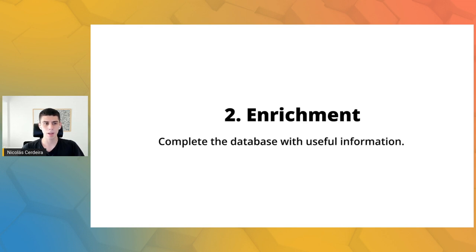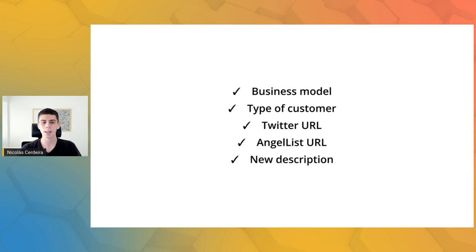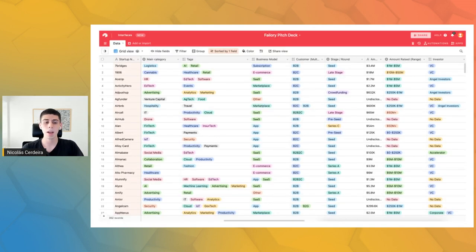The second step was enrichment. We proceeded to enrich each row with information about the pitch deck and the startup that readers could find useful. First, we manually checked each startup to identify their business model and type of customer. Second, with some scraping tools, we found their Twitter and AngelList profile URLs. Then, with an AI writing tool called Quillbot, we rewrote the startup descriptions we had gotten from other websites, in order to avoid having duplicated content on Failory, which can be penalized by Google. This was probably the most time-consuming part of the process — it took around one week.